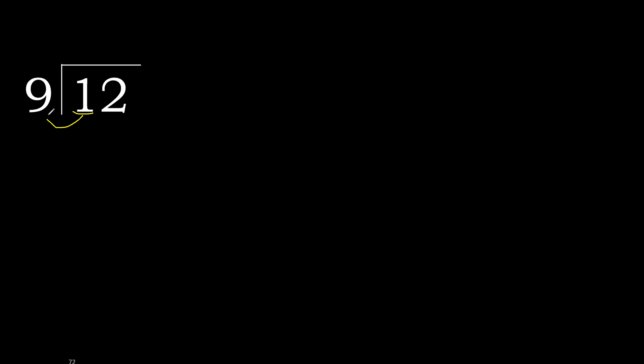12 divided by 9. 1 is less, therefore next. 12 is not less, therefore with 12. 9 multiplied by which number is nearest to 12 but not greater? 9 multiplied by 2 is 18 — 18 is greater. Multiply by 1 is 9, it is not greater. 12 minus 9 is 3.